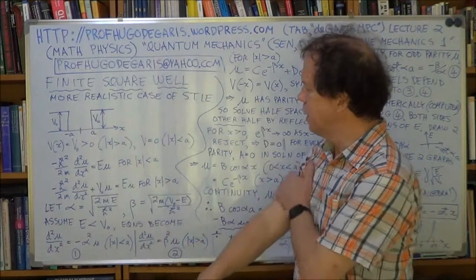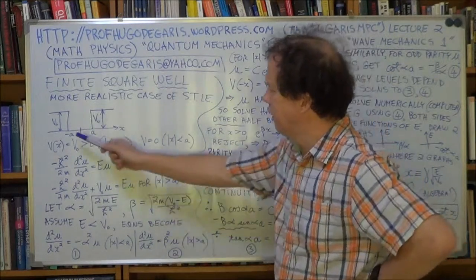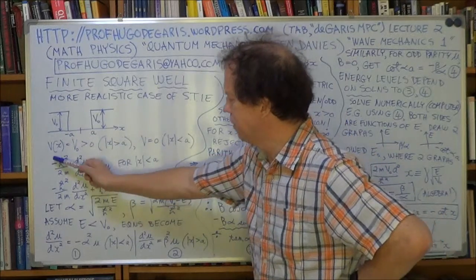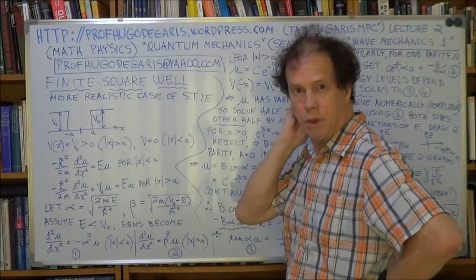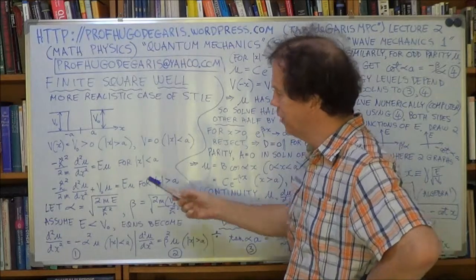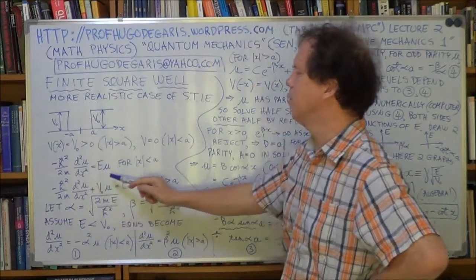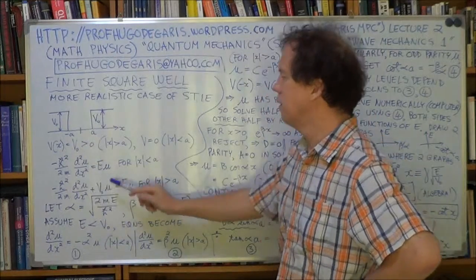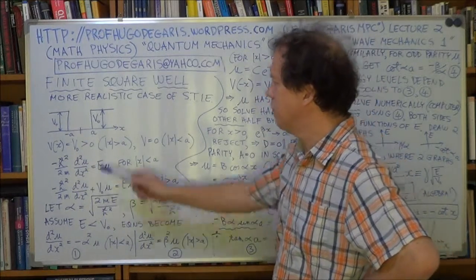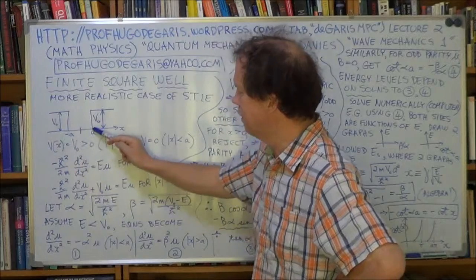We take the STI now. In the area here when V is 0 your STI, the Schrödinger time independent equation, your STI becomes this. We've seen this several times before, so that's nothing new. Now what is new is in these regions.